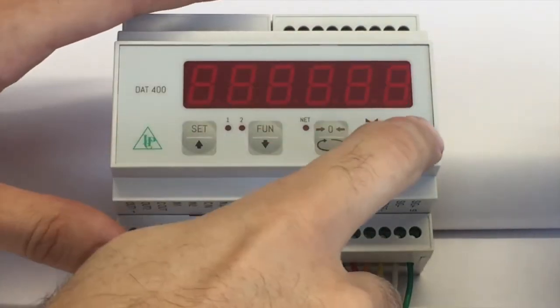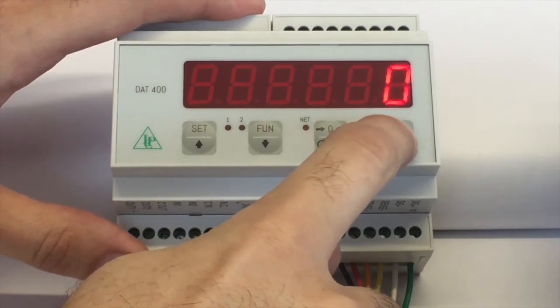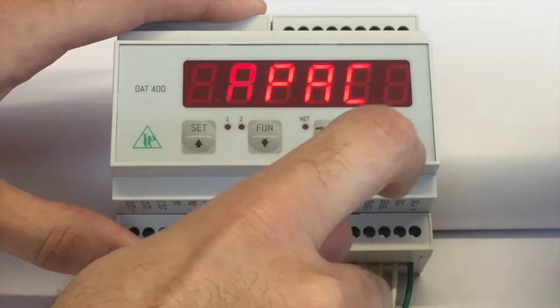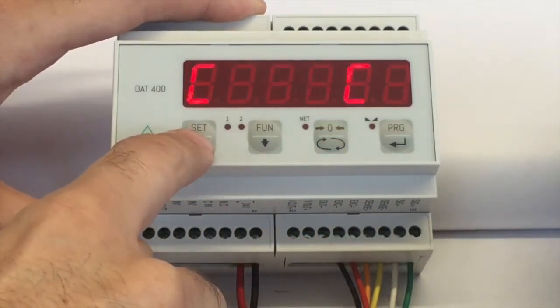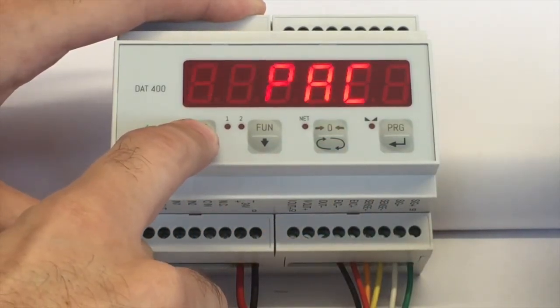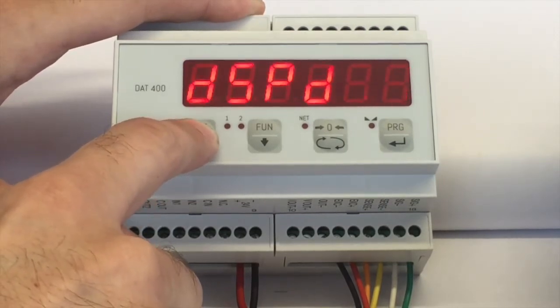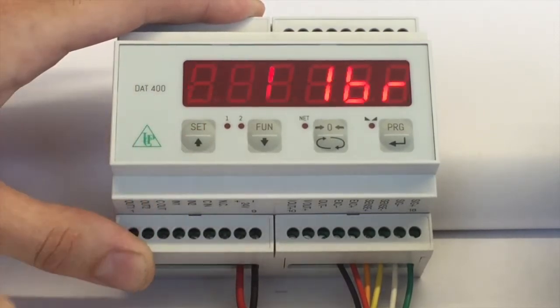To enter the menu, press and hold the PRG button for 3 seconds until CAPEC appears on the display. Press repeatedly the SET button until CALIBRE appears on the display.